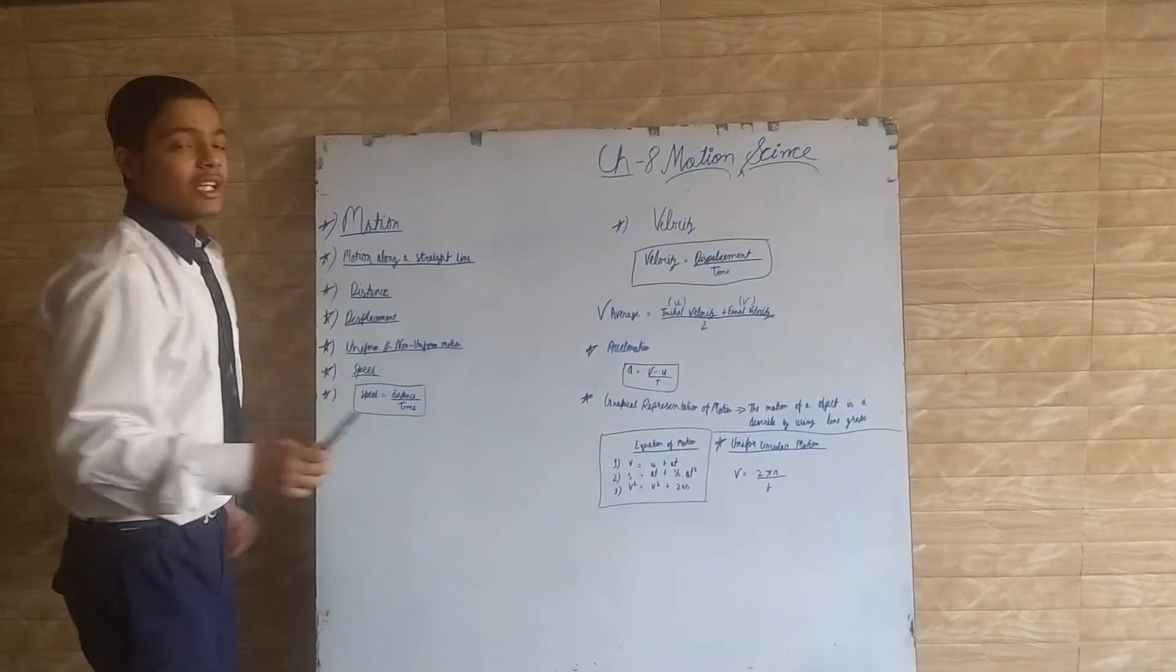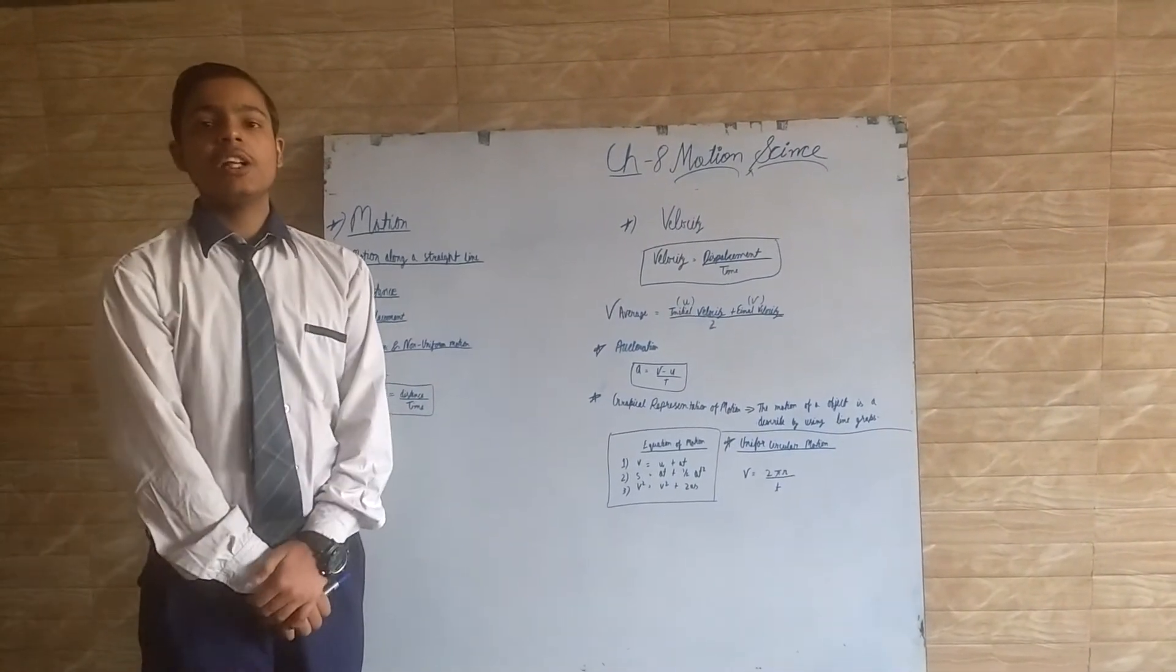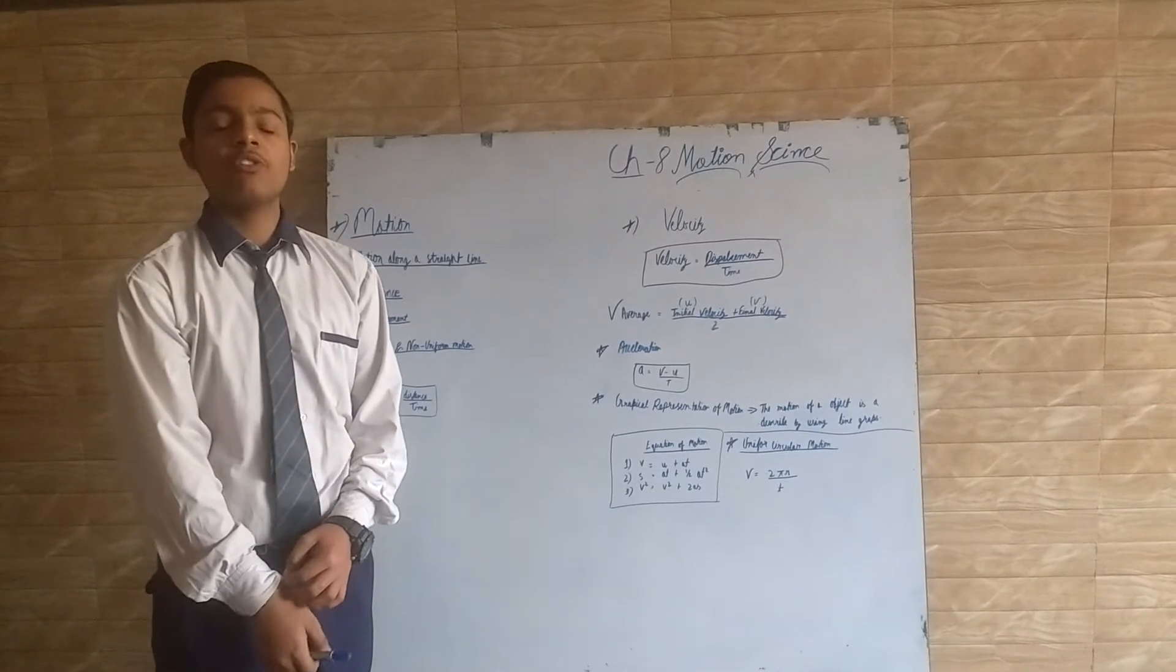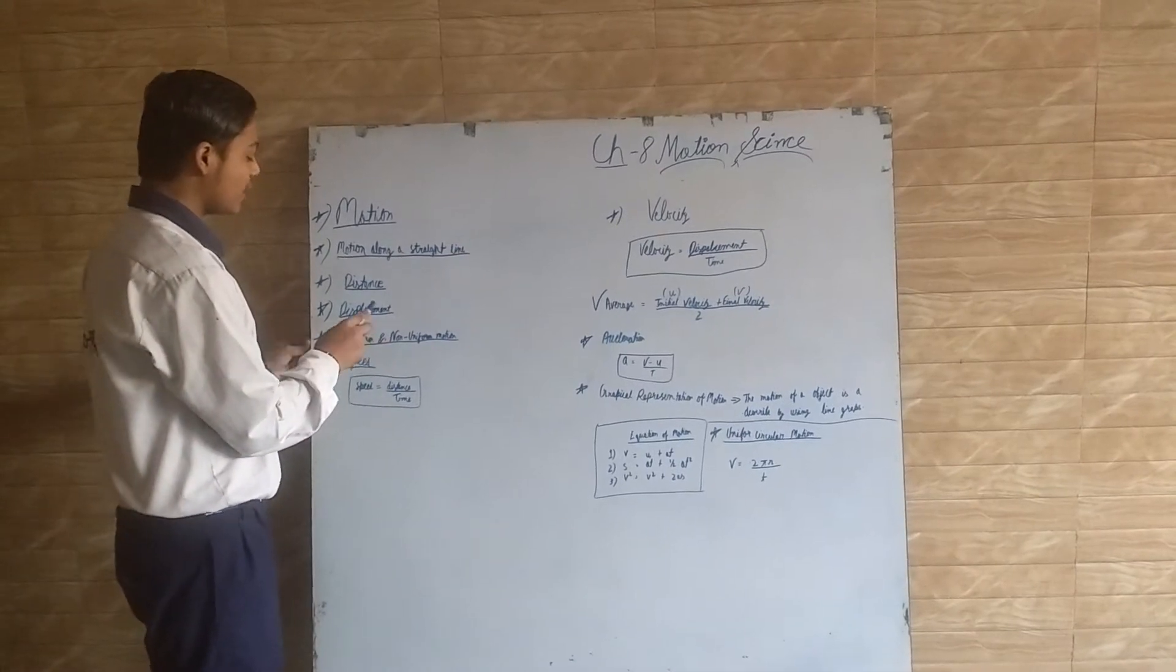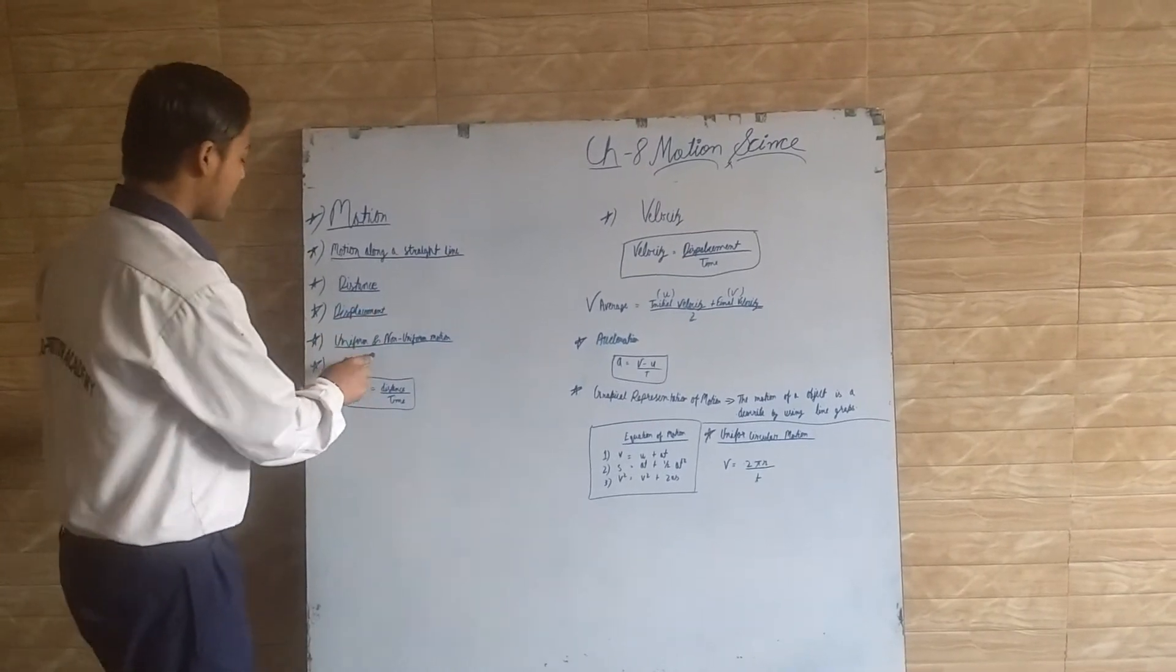Displacement is the shortest distance between the initial and final position of an object. Its SI unit is meter.